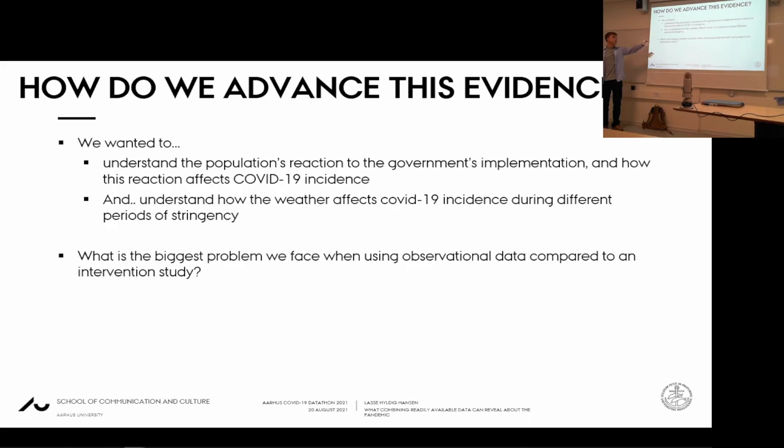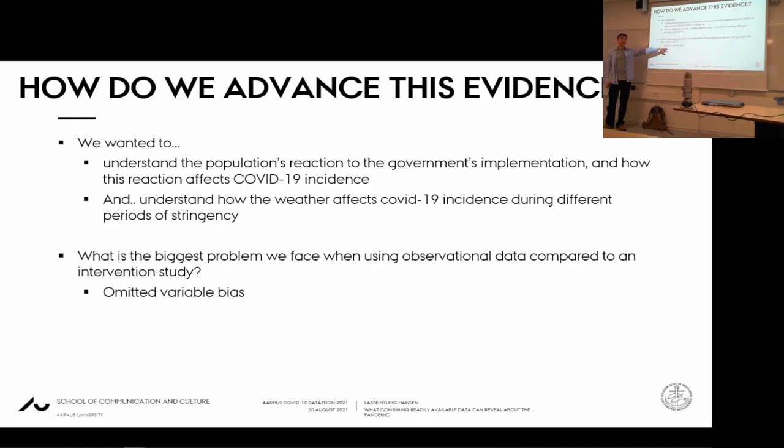The biggest problem when using observational data is omitted variable bias. We're not putting people in a scanner or keeping everything constant but one variable — we're looking at society. There will be a lot of things we cannot control, so we need to be aware of this.